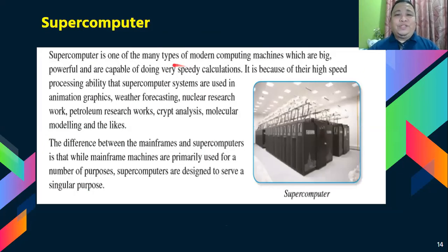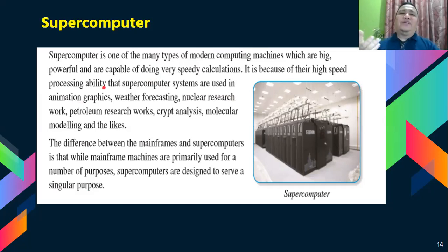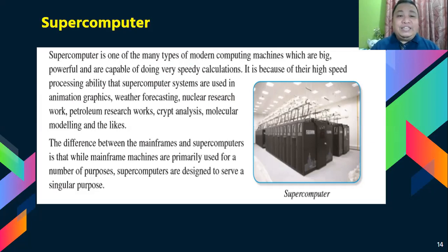Similarly, supercomputers are used for nuclear research, weather forecasting, and animation graphics. These supercomputers are needed by big companies to conduct nuclear research. For example, petroleum research, cryptanalysis, molecular modeling, and organizations like NASA and chemical or multinational companies really need supercomputers for their work.